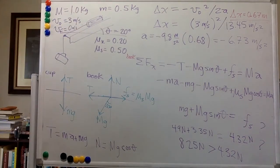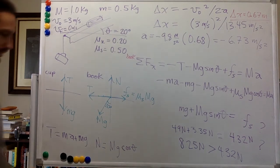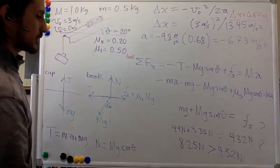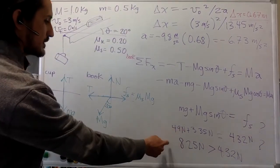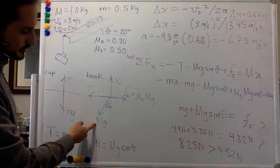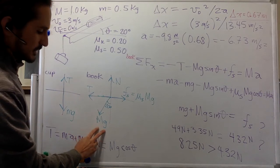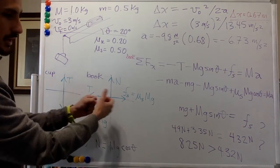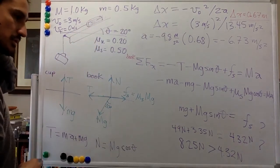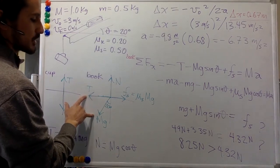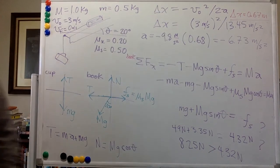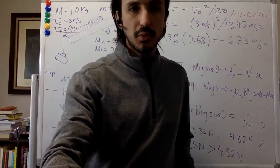For the second part, we calculated the maximum force that static friction can provide, and compared it to the combined force from tension and weight at the top (where acceleration is zero). Since those two forces are greater than the maximum static friction, the book slides back down. Hope you liked this problem — thank you!